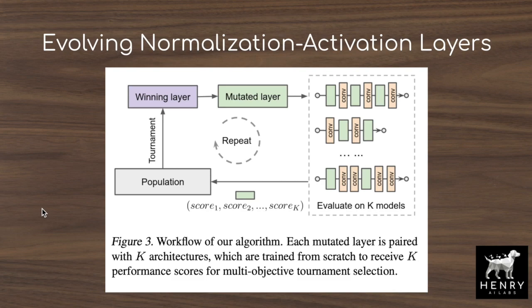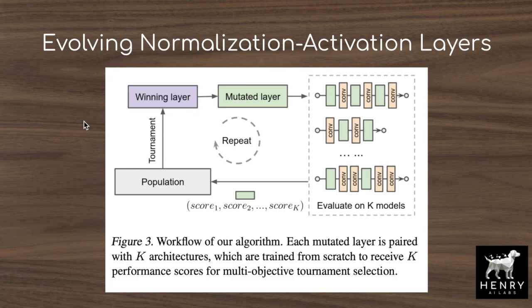Each evolutionary search takes two days to complete with 5,000 CPU workers. A single CPU worker with two cores takes between three to ten hours to train networks on the CIFAR-10 proxy task, which is used to quickly evaluate the network before scaling up to ImageNet classification. They also throw out models after 100 steps that have less than 20% validation accuracy — consistent with the AutoML-Zero observation that most rendered layers are awful. They evaluate on K models including ResNet, MobileNets, and EfficientNets to ensure the discovered layer generalizes across architectures.